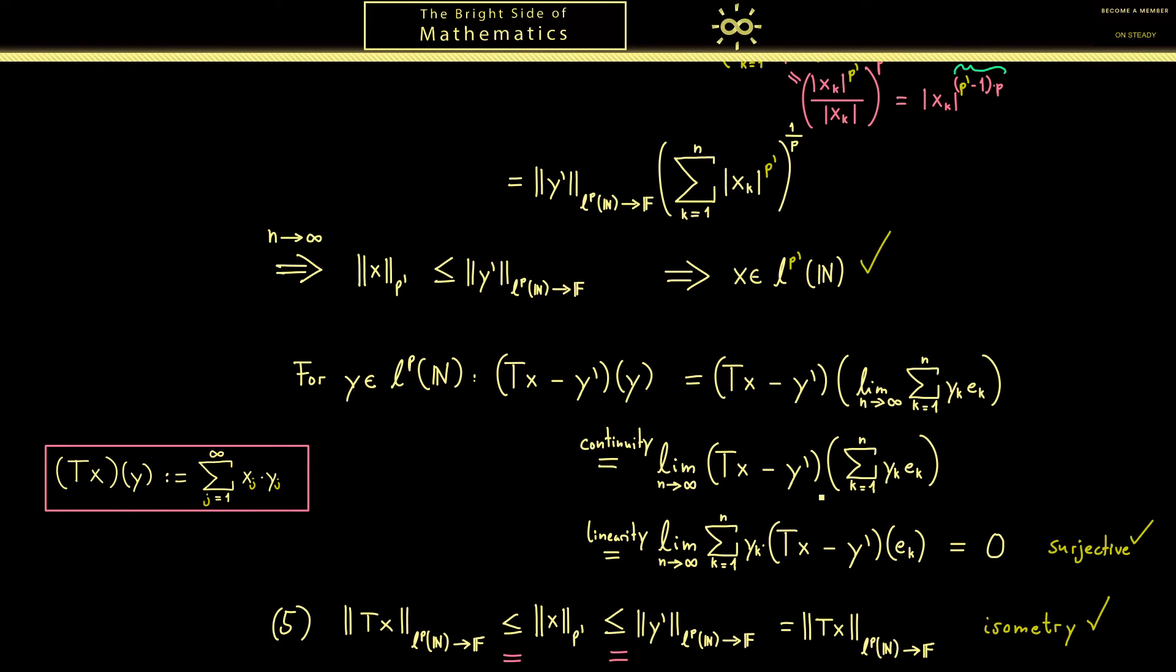Of course this was a technical proof but there are some ideas here you can use for other problems as well. And please always remember the result here. The dual space of Lp is isometric isomorphic to Lp'. I think that's good enough for today. I really hope I see you in the next video and have a nice day, bye!